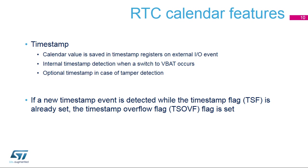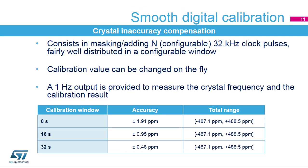A timestamp function is available. The sub-second, time and date values are saved in timestamp registers when an event occurs on the timestamp I/O. A timestamp event can also occur when a switch to VBAT occurs, or when a tamper event is detected. If a timestamp event occurs when the timestamp flag is already set, the timestamp overflow flag is set, and the timestamp registers maintain the timestamp of the previous event. The digital calibration is used to compensate crystal inaccuracy and accuracy variations with temperature and ageing. It consists in masking or adding a programmable number of RTC clock cycles, fairly well distributed in a configurable window.